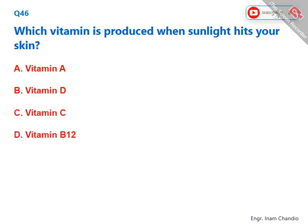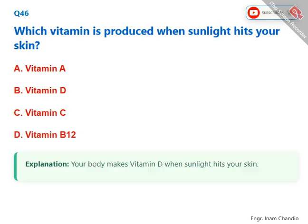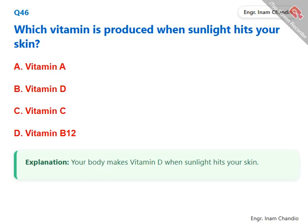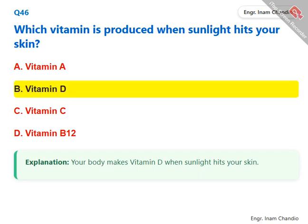Which vitamin is produced when sunlight hits your skin? Your body makes vitamin D when sunlight hits your skin. The correct answer is B. Vitamin D.